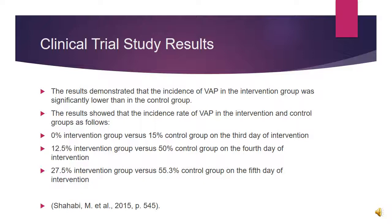The results from the study were alarming. The incidence of VAP in the intervention group was significantly lower than in the control group. On the third day of intervention, 0% of the intervention group had contracted VAP while 15% of the control group had. By the fourth day, 12.5% of the intervention group had contracted VAP while 50% of the control group had. On the fifth day, 27.5% of the intervention group had signs of VAP while 55.3% of the control group had VAP.